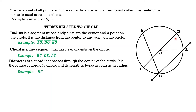We have radius line segment DO and line segment EO, which together form the diameter. Therefore, a diameter contains two radii.